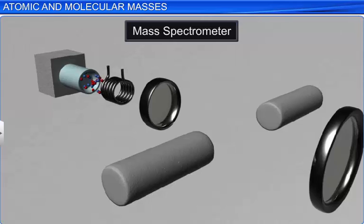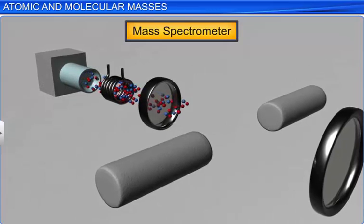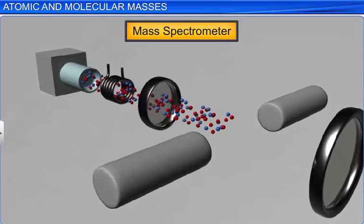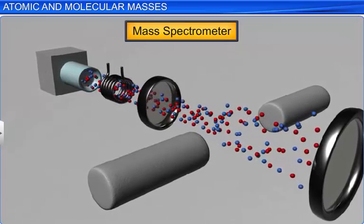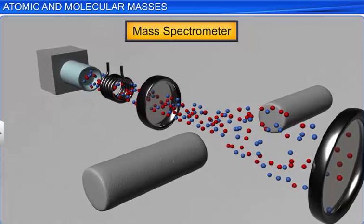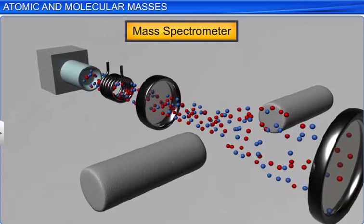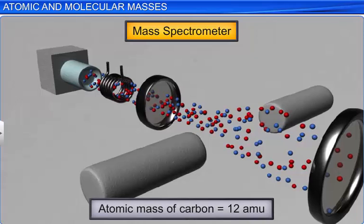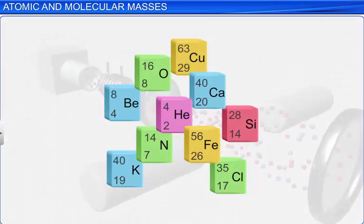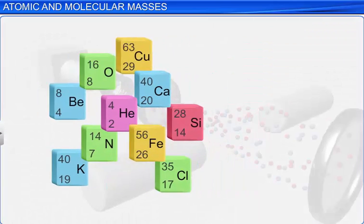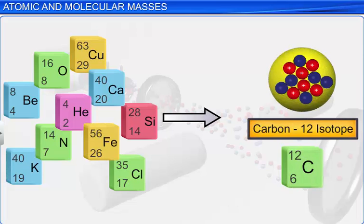By that time, due to the advancement of technology, scientists started using a mass spectrometer to calculate the accurate atomic mass of elements. The atomic mass of carbon was determined using a spectrometer and was found to be 12 atomic mass units, AMU. All other atoms were assigned a mass relative to the atomic mass unit of carbon.